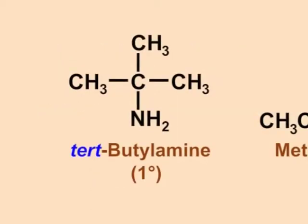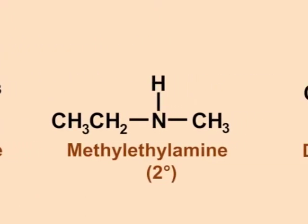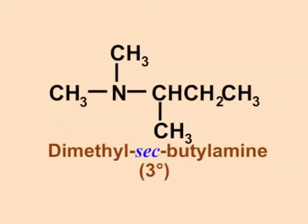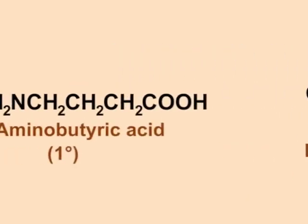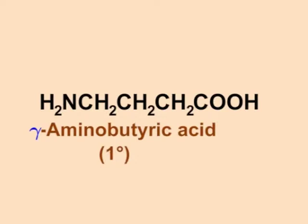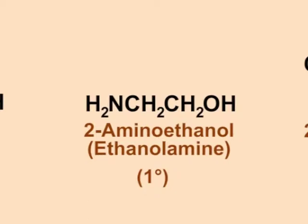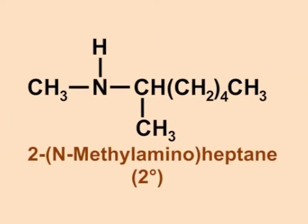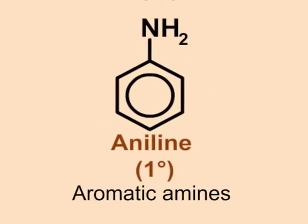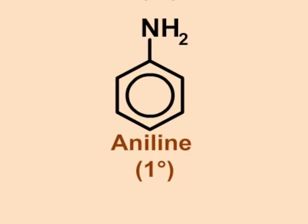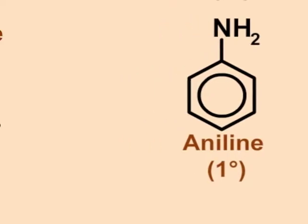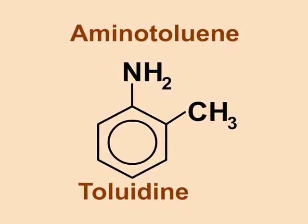Let us look at a few examples. Tertiary butyl amine is a primary amine. Dimethyl secondary butyl amine is a secondary amine and a tertiary amine. Gamma aminobutyric acid is a primary amine. 2-aminoethanol or ethanolamine is a secondary amine. 2-N-methyl amino heptane is a secondary amine. Aromatic amines are those in which nitrogen is attached directly to an aromatic ring. These are generally named as derivatives of the simplest aromatic amine, aniline. Aminotoluene is given the special name toluidine.